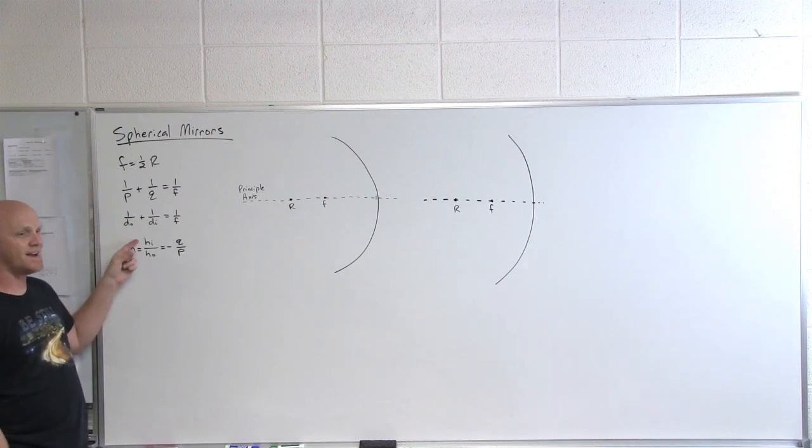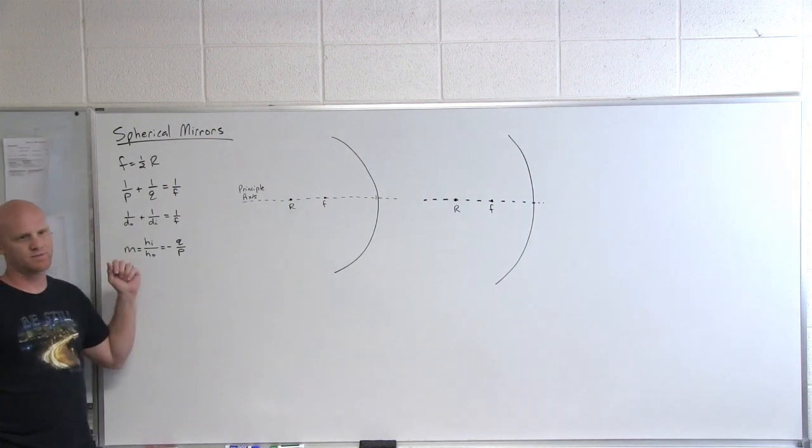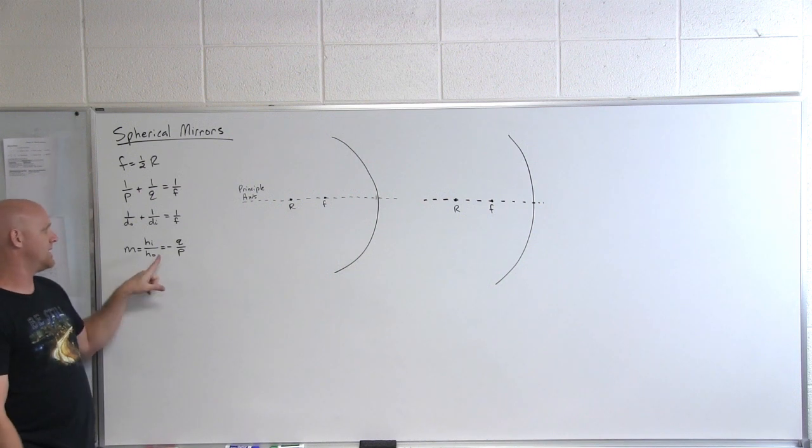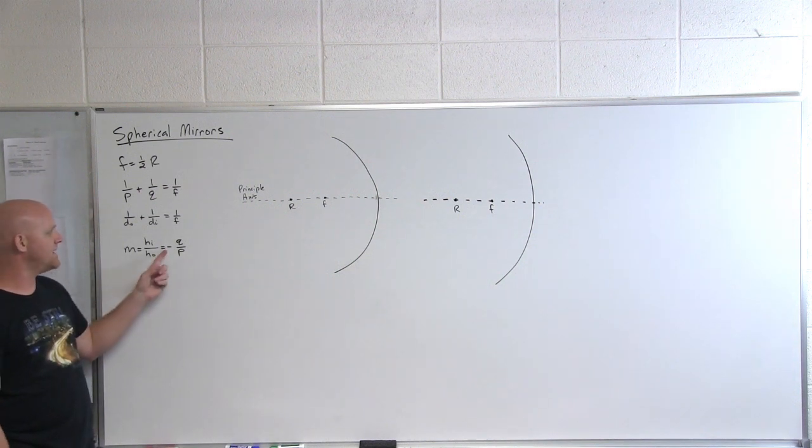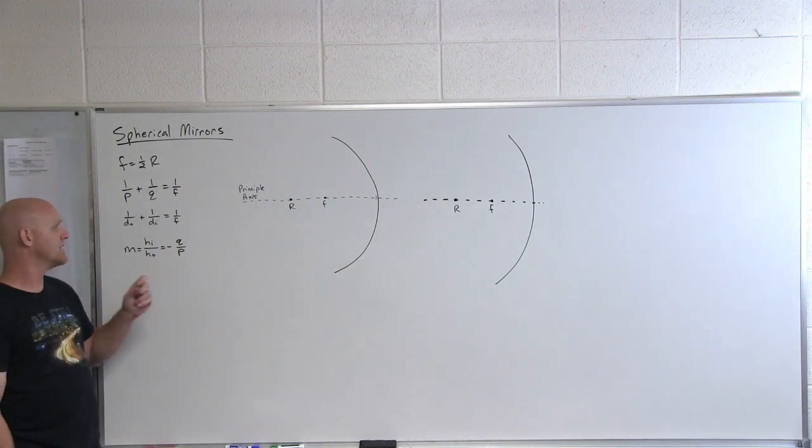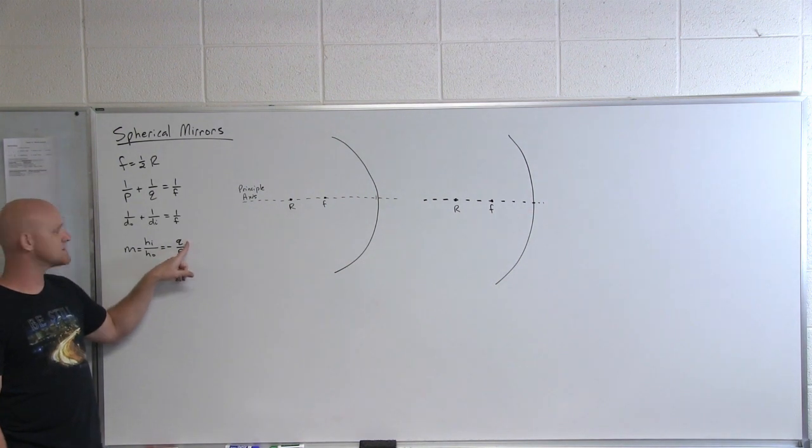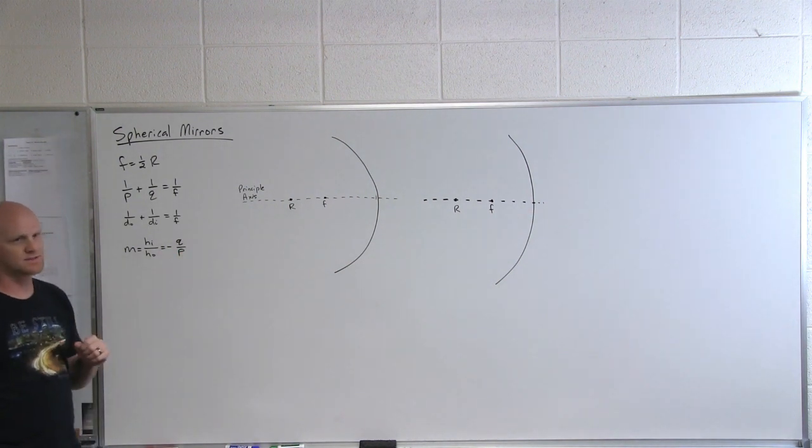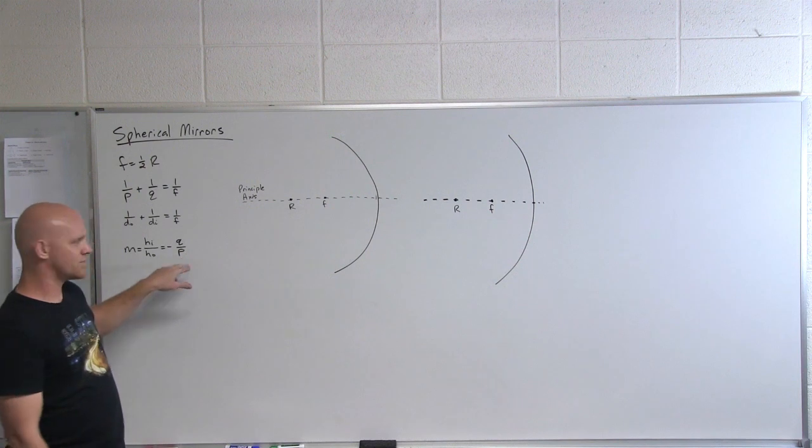Your magnification is just simply the height of the image over the height of the object. And that also turns out is equal to the negative - we'll find out what that means later - but the negative ratio of the image distance over the object distance. We'll see why that plays a role.